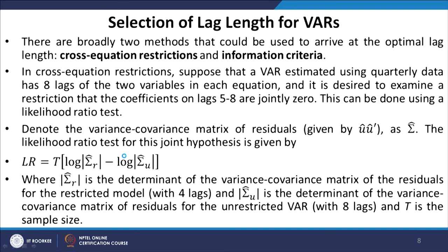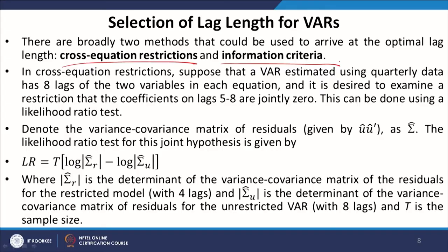Now, how do we select the lag lengths for VAR models? There are broadly two methods: cross-equation restrictions and information criteria. In the cross-equation restrictions approach, suppose a VAR estimated using quarterly data has 8 lags of two variables in each equation — so k = 8, giving yt−1 to yt−8 and zt−1 to zt−8 on the right hand side of both equations.